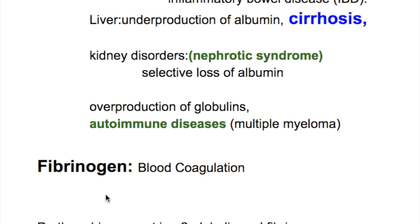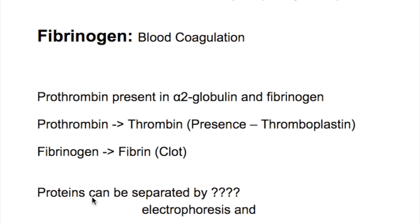Fibrinogen is responsible for blood coagulation. How does it cause coagulation? Fibrinogen is converted to fibrin to make a clot under the action of thrombin, after a cascade of reactions of the intrinsic and extrinsic pathways.